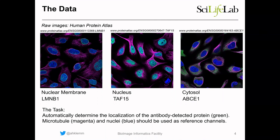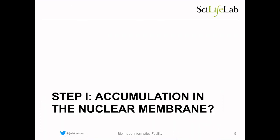I brought a subset of these images where the protein mainly localizes either in the nuclear membrane, in the nucleus, or in the cytosol. The question for today is: we want to automatically determine where in the cell the protein localizes. To find this out we have two more channels — microtubules labeled in magenta and nuclei with a DAPI stain in blue. In the first step we will focus only on whether the protein localizes in the nuclear membrane or in the nucleus — we won't look at the cytosol.